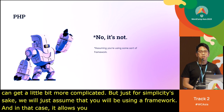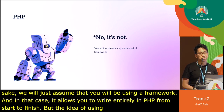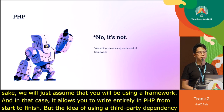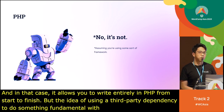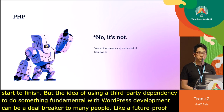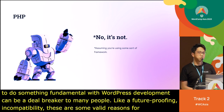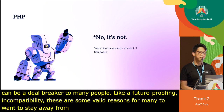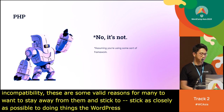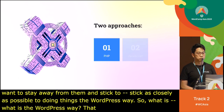But the idea of using a third-party dependency to do something fundamental with WordPress development can be a deal-breaker to many people. Concerns like future-proofing and incompatibility are valid reasons for many wanting to stay away from them and stick as closely as possible to doing things the WordPress way. So what is the WordPress way? That brings me to my second approach, which is JavaScript.